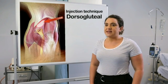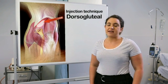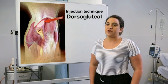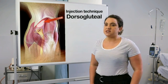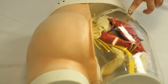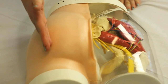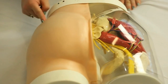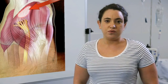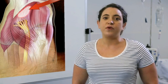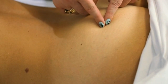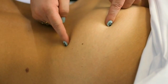Dorsogluteal injection method: Place the patient in a prone, face-down position, or lying on their side. Some patients may prefer standing up. The correct injection site is the upper outer quadrant, which can be identified in two ways. First, divide the buttock into four quadrants and select the upper outer quadrant for injection. Second, draw an imaginary diagonal line from the posterior superior iliac spine to the greater trochanter; from the middle of that line, go up and out to identify the injection site.